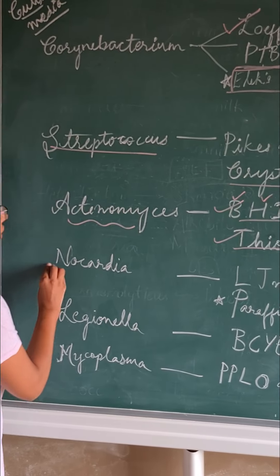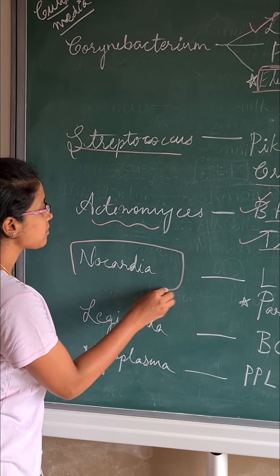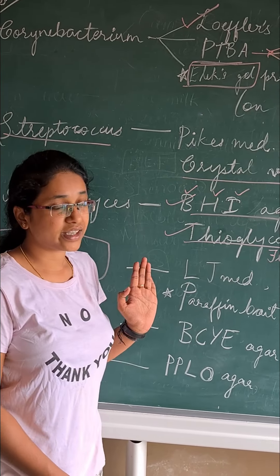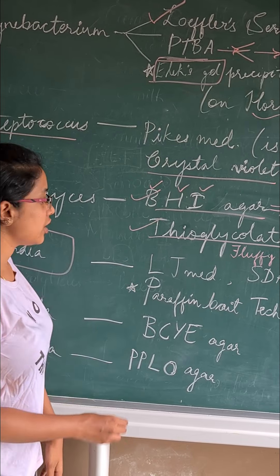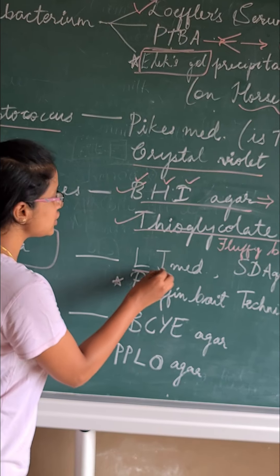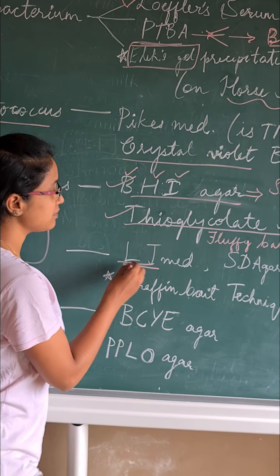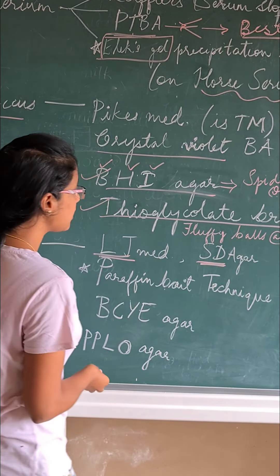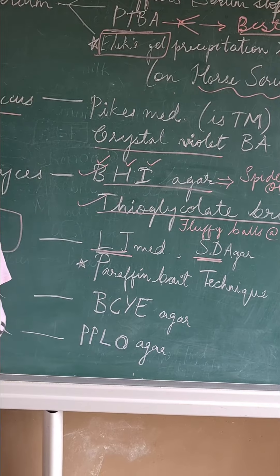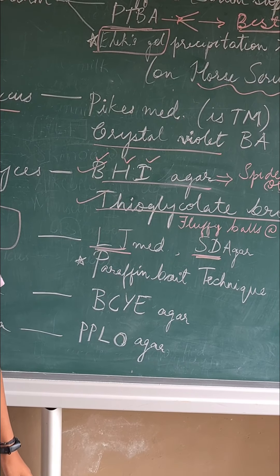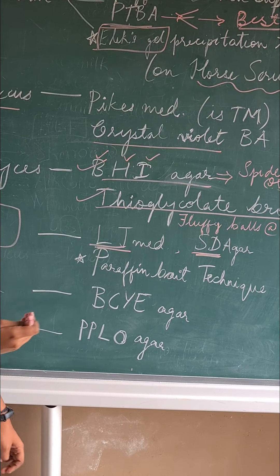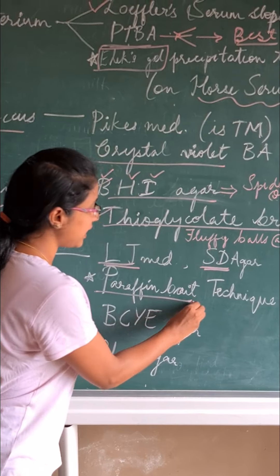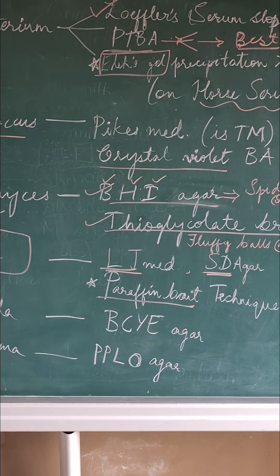Nocardia can be cultured on Lowenstein-Jensen medium and Sabouraud dextrose agar. The special technique used to diagnose Nocardia infection is the paraffin bait technique.